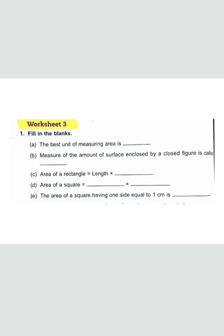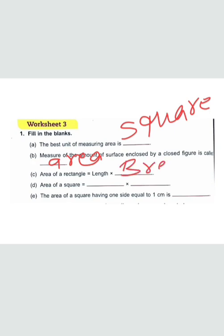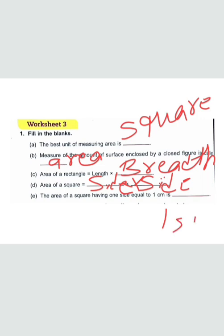Fill in the blanks. The best unit to measure area is a square measure. The amount of the surface enclosed by a closed figure is called the area — this is the definition of area. Area of a rectangle is length multiplied by breadth. Area of a square is side multiplied by side. The area of a square having one side equal to one centimeter is one square centimeter.